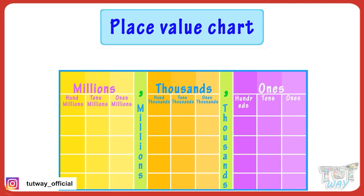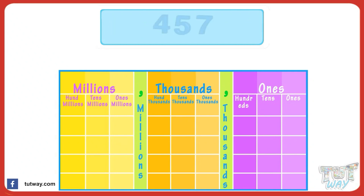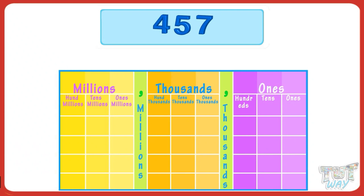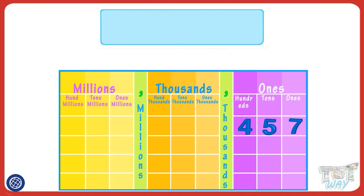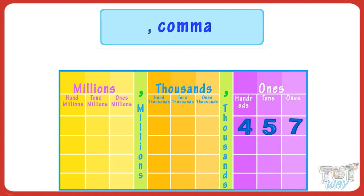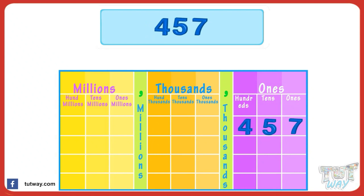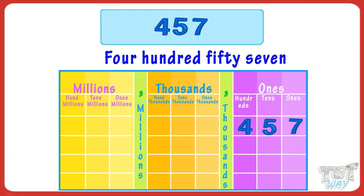Now let's start with a three-digit number. Here is the number in the place value chart starting from the ones digit: 7 below ones place, 5 below tens place, 4 below hundreds place. The whole number is in the ones period, so no comma is needed. It will be written and read as 457.